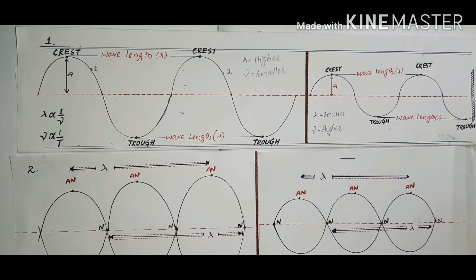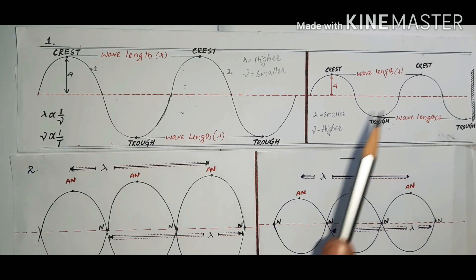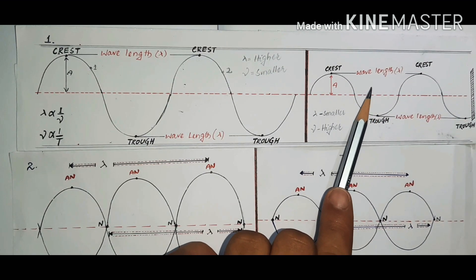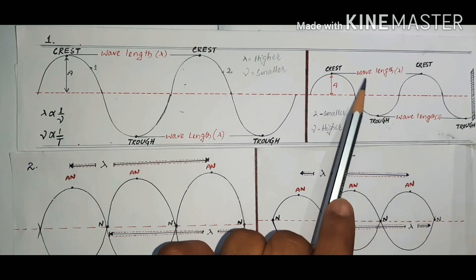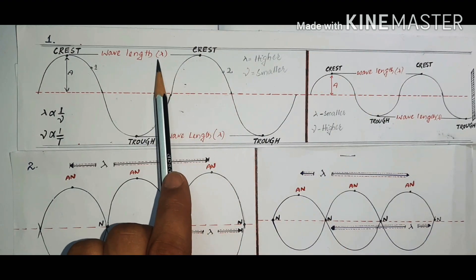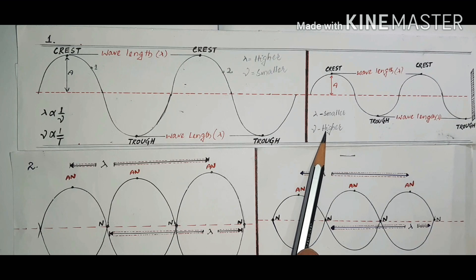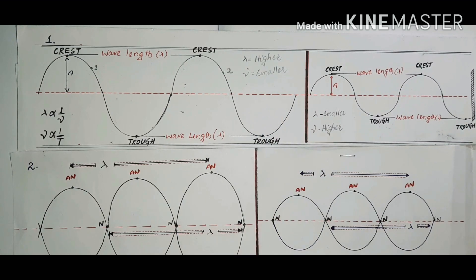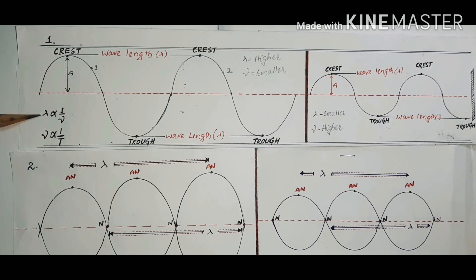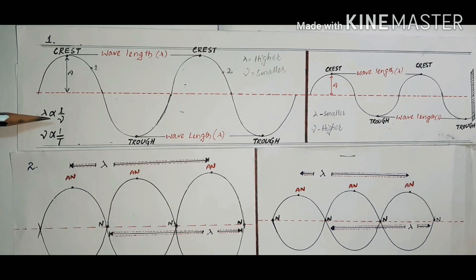Now we are going to relate the two concepts: wavelength and frequency. The wave with less wavelength has higher frequency, and the wave with higher wavelength has lower frequency. As the wavelength goes on increasing from smaller to higher, the frequency goes on decreasing from higher to smaller. They are related by the equation: lambda is inversely proportional to frequency.